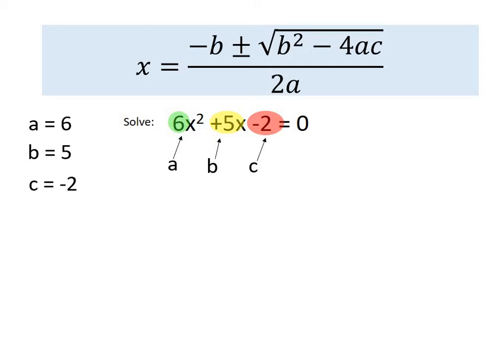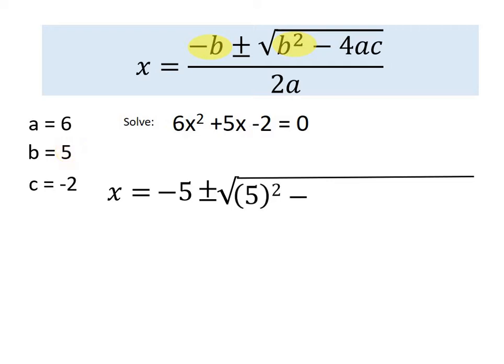So now we're going to input that into our formula. We know that x equals minus b. So we want the negative of whatever b is. In this case it's 5, so minus 5. Plus or minus the square root of b squared, so 5 squared, minus 4ac. So 4 times a, which was 6, times c, which was negative 2. All over 2a, so 2 times 6.